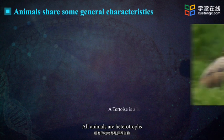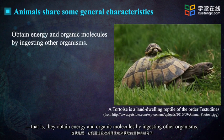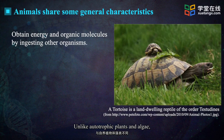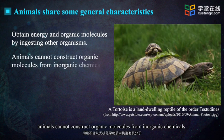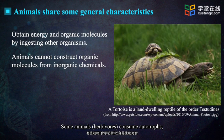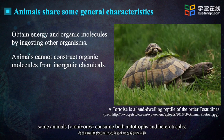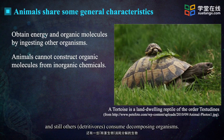All animals are heterotrophs — that is, they obtain energy and organic molecules by ingesting other organisms. Unlike autotrophic plants and algae, animals cannot construct organic molecules from inorganic chemicals. Some animals, herbivores, consume autotrophs. Other animals, carnivores, consume heterotrophs. Some animals, omnivores, consume both autotrophs and heterotrophs. And others, detritophores, consume decomposing organisms.